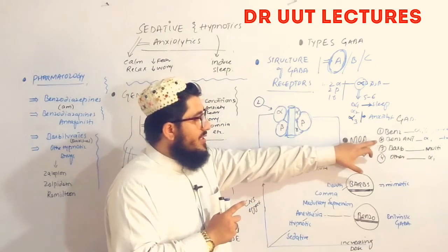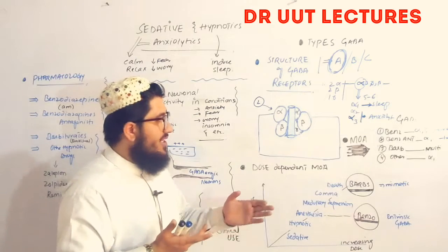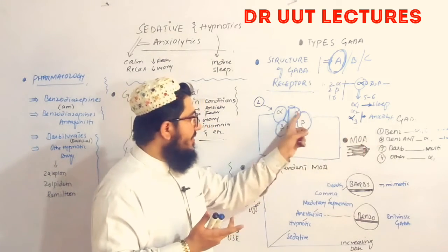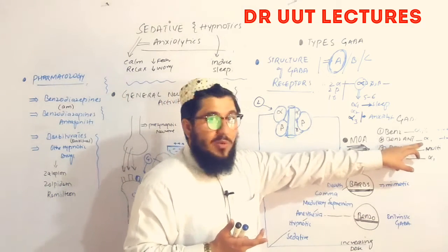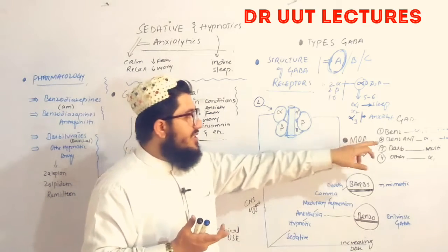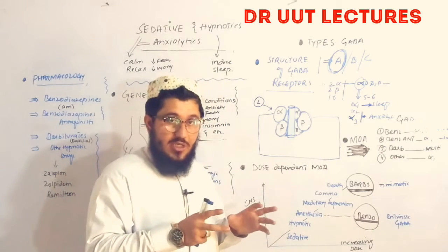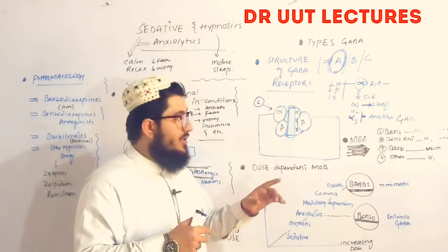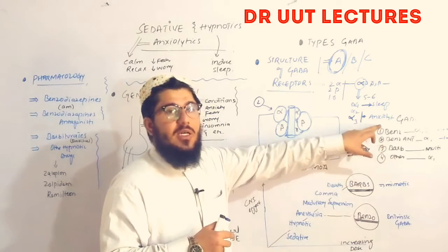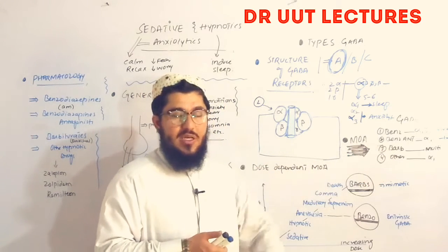The benzodiazepine antagonist is flumazenil. It binds to the alpha-1 subunit — the same site as benzodiazepines — and exerts an antagonistic effect. Flumazenil is used clinically in conditions of benzodiazepine hyperactivity or overdose to reverse the effects of benzodiazepines.